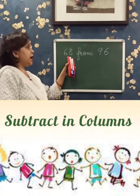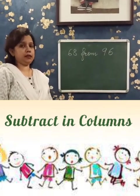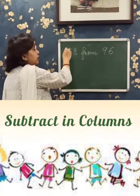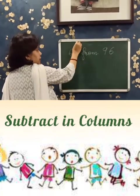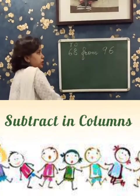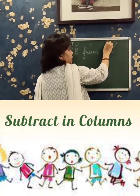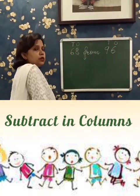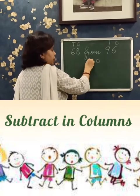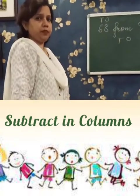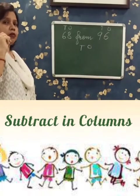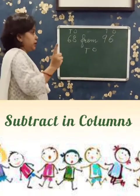68 from 96. First write places above the numbers. 68 is 2 places: O, T. 96 is 2 places: O, T. Now write O, T in the answer's place. Always in subtraction, write the bigger number first.